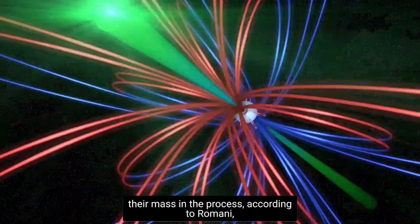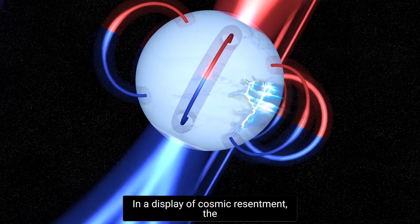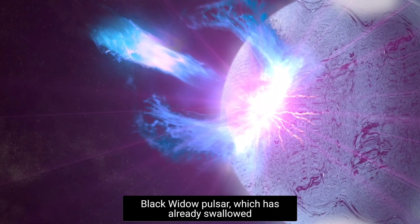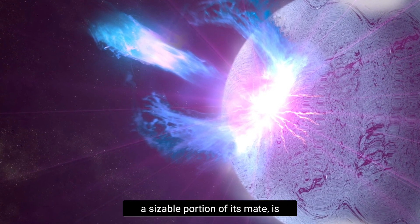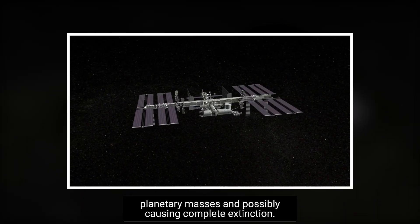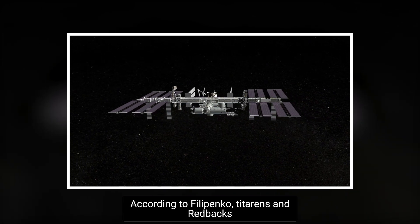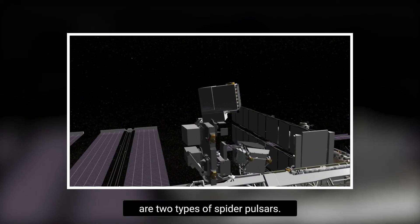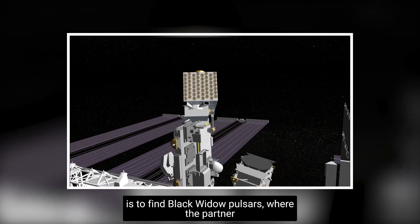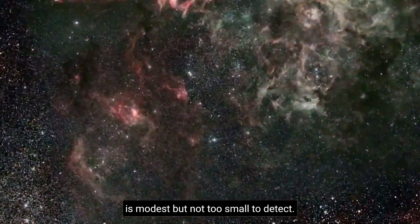In a display of cosmic resentment, the black widow pulsar, which has already swallowed a sizable portion of its mate, is now heating and evaporating the companion to planetary masses and possibly causing complete extinction, according to Filippenko. One of the few techniques to weigh neutron stars is to find black widow pulsars where the partner is modest but not too small to detect.